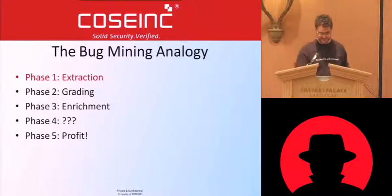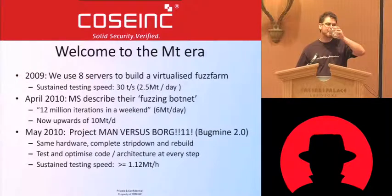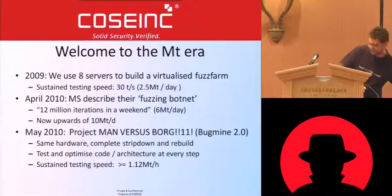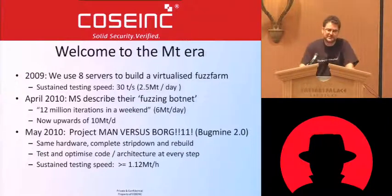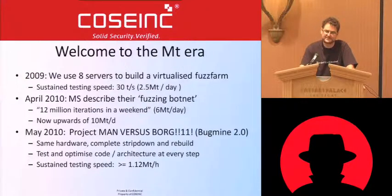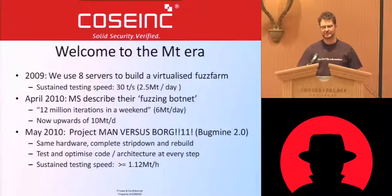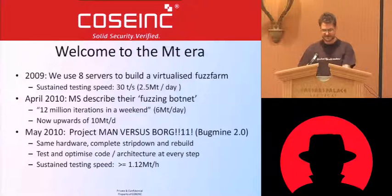Let's talk first about extraction, which is fuzzing, but fast. In 2009, we built a distributed fuzzing farm using eight servers, eight physical boxes — that's 64 cores. I took my initial fuzzer that I wrote on my laptop, which does about 30 to 45 tests per minute, and scaled up to 30 tests a second, which at the time I thought was pretty impressive.